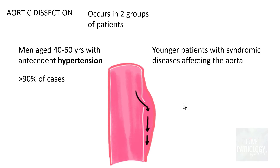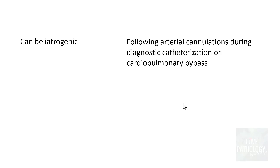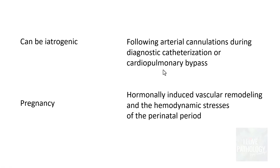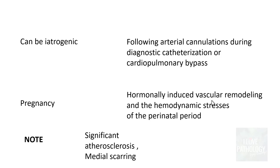The second group of patients are younger individuals with syndromic diseases affecting the aorta, for example Marfan syndrome. Aortic dissections can also be iatrogenic — seen after arterial cannulation during diagnostic catheterization or cardiopulmonary bypass — and can also occur in pregnancy due to hormonally induced vascular remodeling and hemodynamic stresses. Note that if there is significant atherosclerosis or scarring of the tunica media, then dissecting aneurysm is extremely unusual.